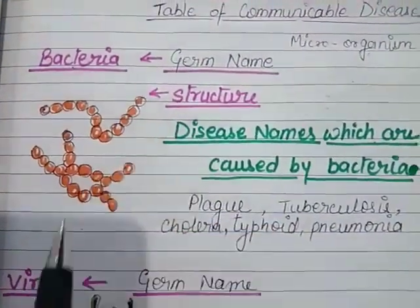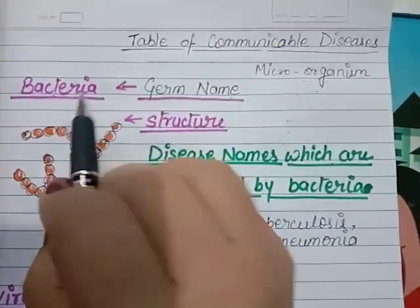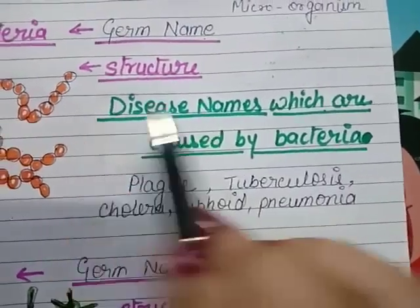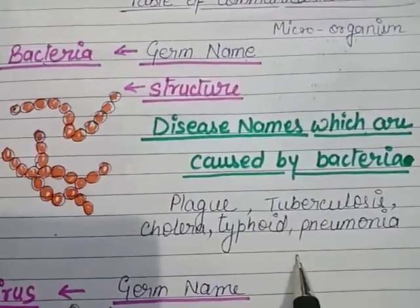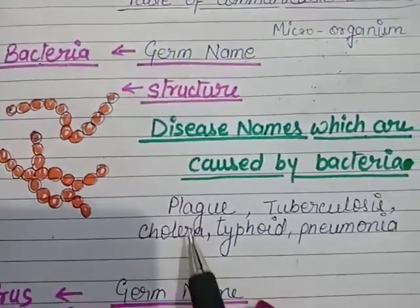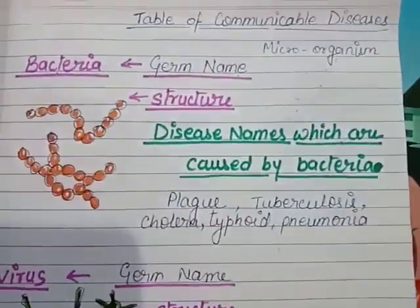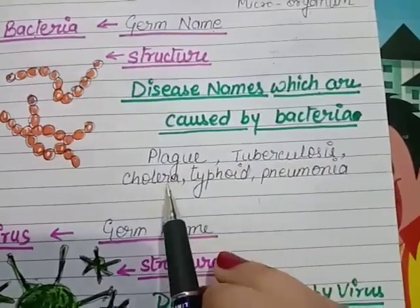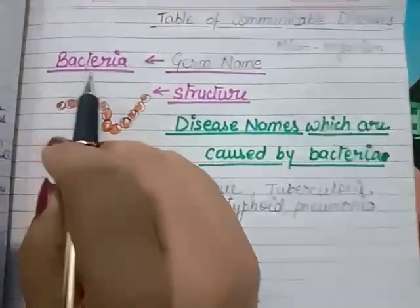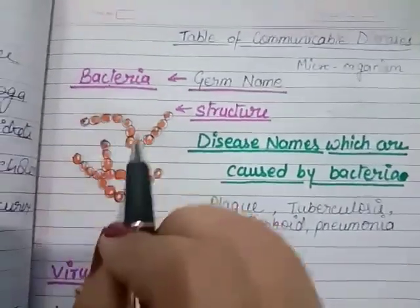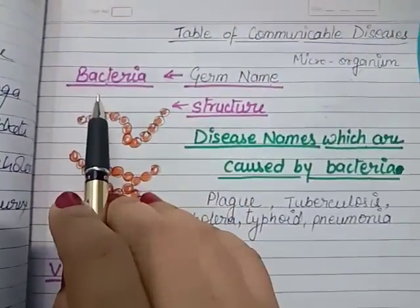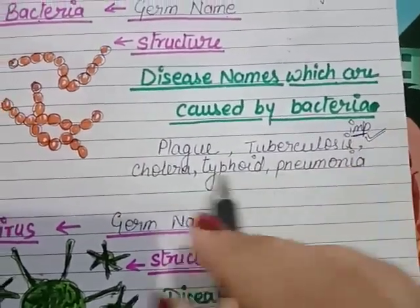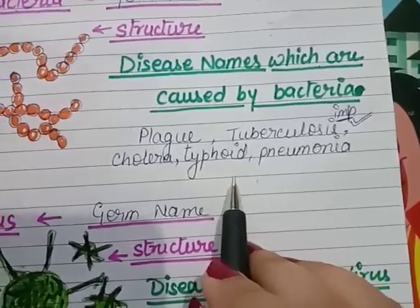I have made a diagram of the bacteria so you can easily understand. The germ name is bacteria. There are some diseases caused by bacteria — they spread from one person to another. The diseases caused by bacteria are: plague, tuberculosis, cholera, typhoid, and pneumonia. These are known as bacterial diseases. Please learn the names of the bacterial diseases because this is a very important question, especially for the exam.